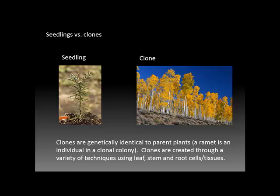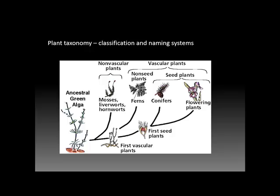Horticulturalists use clones and cloning to create a variety of horticultural products. Clones can be produced using leaves, stems, roots, and other tissues. The significance of the genetic uniformity of clones versus the genetic variability of seedlings will become clear as we get further into the course.